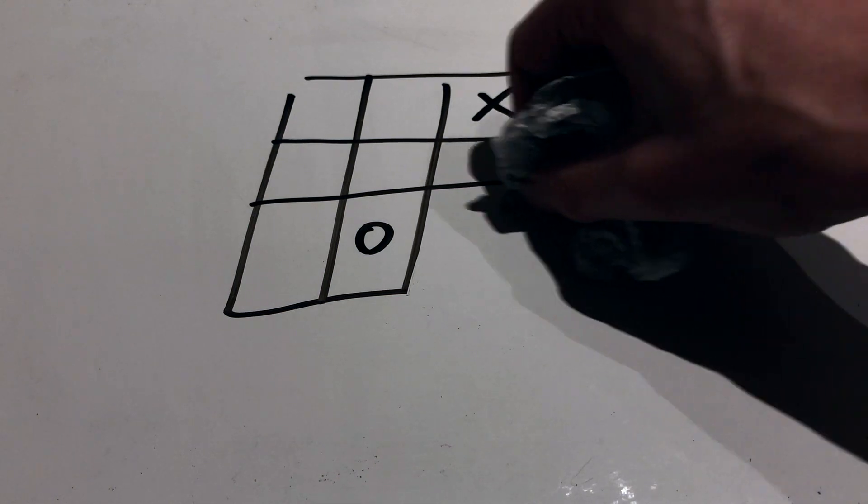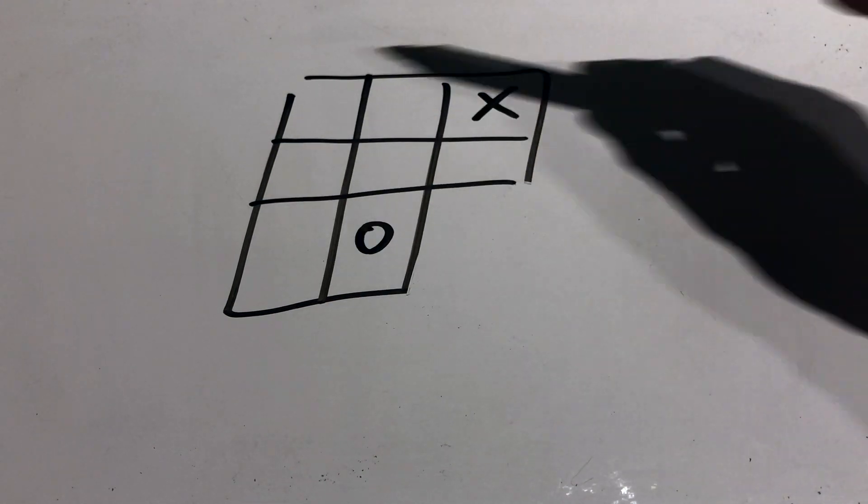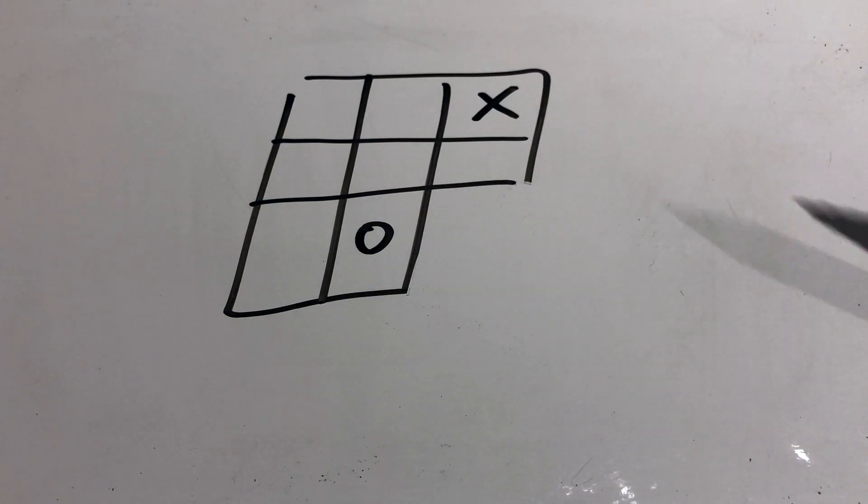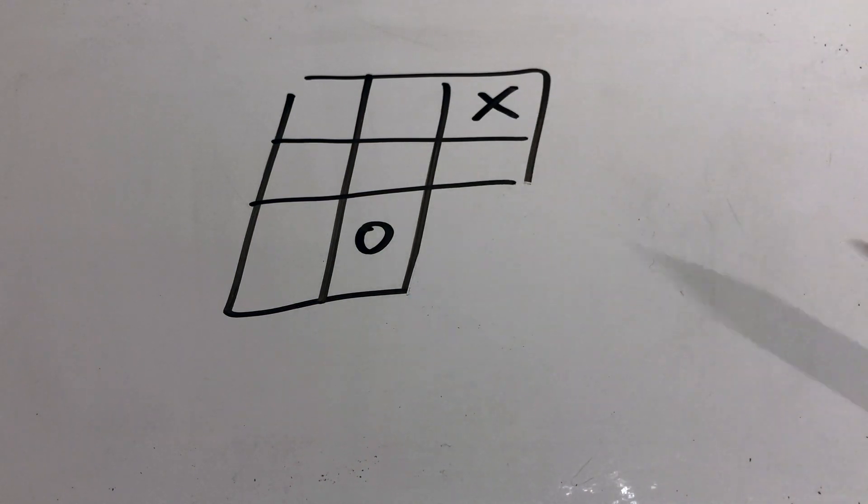If you start removing squares, then the whole game changes. The designer has to be aware of what they're designing for. Now here we've only discussed a 3x3 grid, but imagine this gets even more complicated because it's in a 3D space. And this is why the designer really needs to know what blank canvas are they working on.